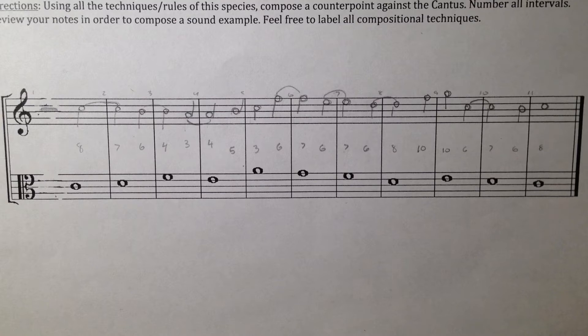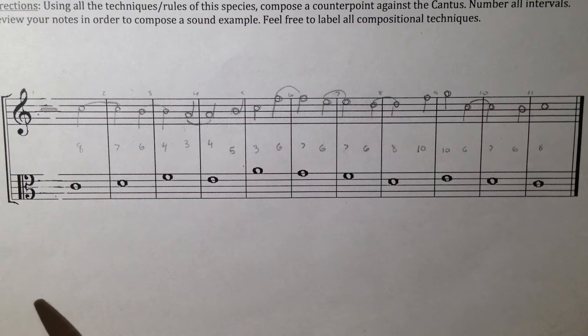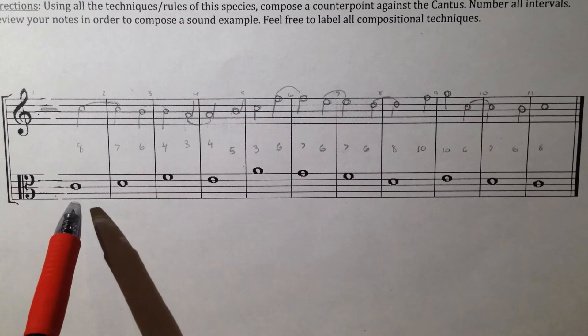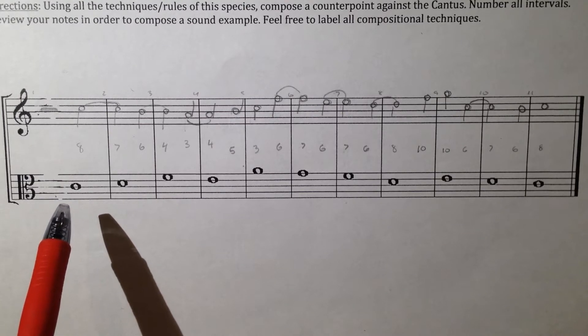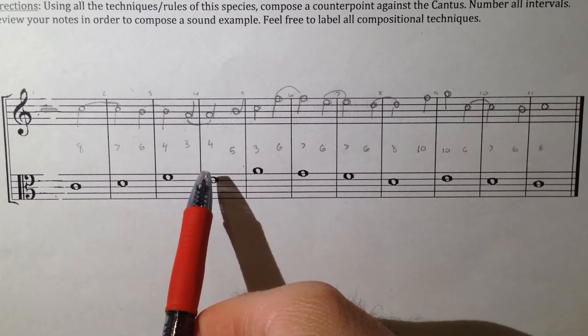We are in the key of C major and in Species Counterpoint 4, you compose in half notes against a given whole note cantus. What's important about the half notes is that now for the first time you're able to put a dissonance on a downbeat.